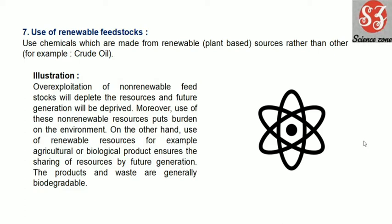Instead, we will try to use more plant-based or natural resources. Non-renewable resources such as petrol, diesel, coal, and hydrocarbons — if we use more of these, we will not be able to save anything for future generations. We are creating a burden on our environment through pollution and health effects. So we need to use more renewable resources such as agricultural and biological products, which are environment friendly and can be preserved for future generations.